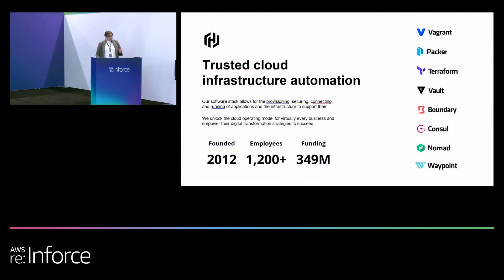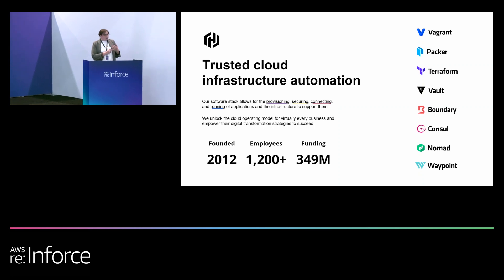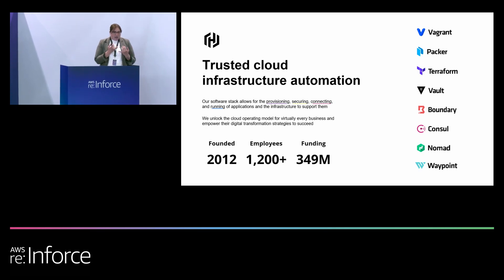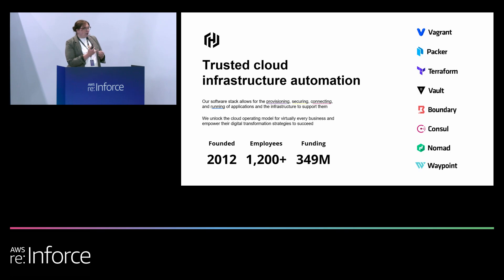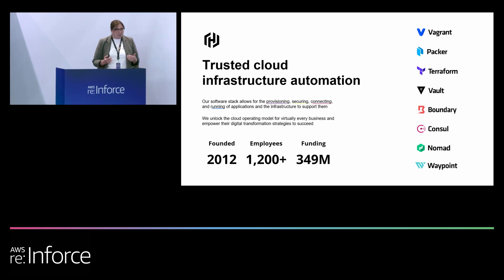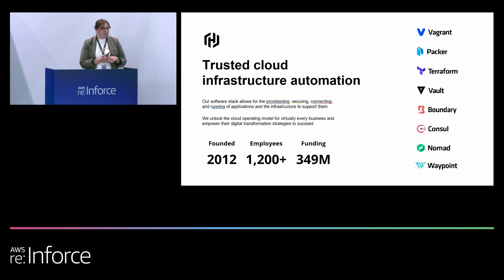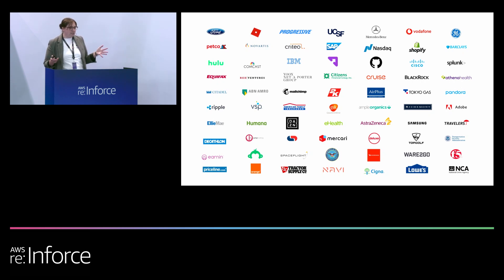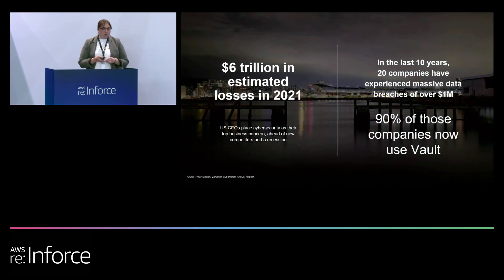HashiCorp helps companies standardize their cloud operating model for the shift to multi-cloud and modern data center environments. We offer solutions that support that transition across infrastructure, security, networking, and application delivery. We're built on open source, and we see huge adoption across practitioners to standardize workflows for deploying infrastructure, secrets management, and service networking. We're also becoming the go-to for zero trust security for enterprise solutions for some of the largest businesses across industries globally, and we went public back in 2021 to ensure we could continue to invest in that growth.